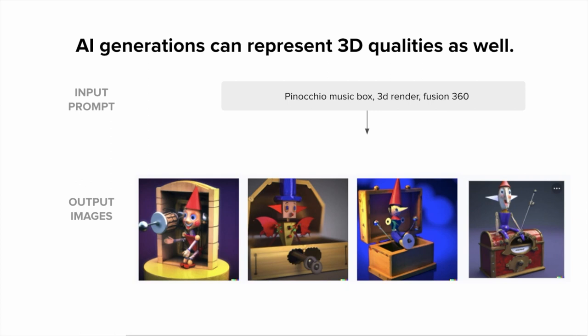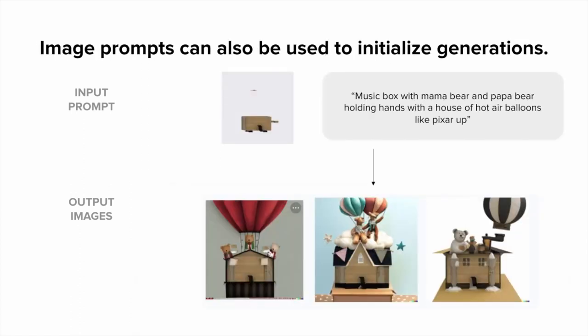There are also ways to incorporate images as input. You can provide images to initialize generations and steer them towards compositions you want. For example, if we provide part of a music box with a transparent background alongside a text prompt like 'music box with Mama Bear and Papa Bear holding hands with a house of hot air balloons like Pixar Up,' the generation builds off that initial image.